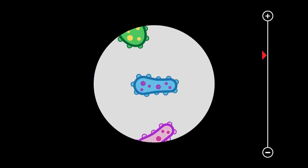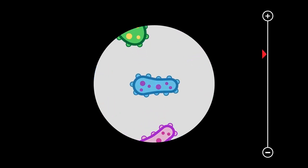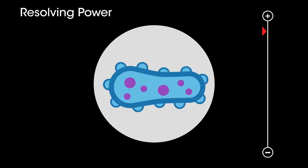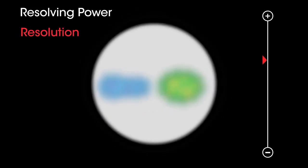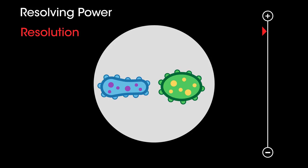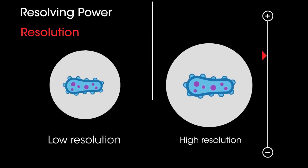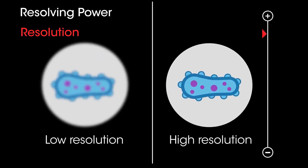A microscope magnifies objects and makes a larger image. This allows us to see objects in more detail. Resolving power or resolution is also a feature of microscopes. Resolution is the ability to distinguish two different points as being separate. Basically, using a microscope with a high resolution means that you can increase the magnification further without the image becoming blurry.